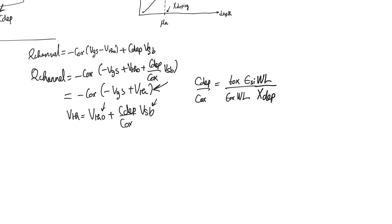So this is going to reduce into epsilon silicon multiplied by T-oxide over epsilon oxide multiplied by X-depletion.